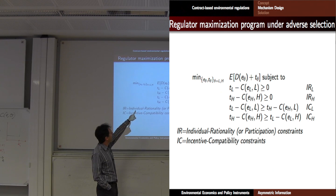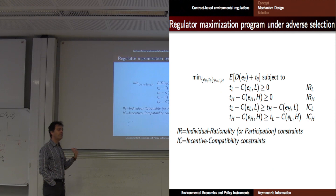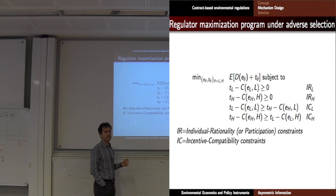The transfer should at least cover the cost for each type. Then you have a second constraint which is more tricky, which makes sure that each type of firm picks the transfer and emission assigned to itself — it reveals its own type by selecting the right abatement or emission and subsidy.